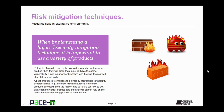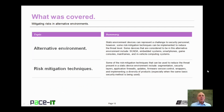When implementing a layered security mitigation technique, it is important to use a variety of products. If all of the firewalls used in the layered approach are the same product, then they will more than likely all have the same vulnerability. Once an attacker breaches one firewall, the rest will likely fall in short order. A best practice is to implement a diversity of products for security considerations, such as using different firewall devices at the different layers. If different products are used, the hacker has to figure out how to get past each individual product and cannot rely on the same vulnerability being present in each device.